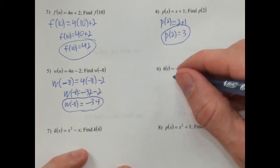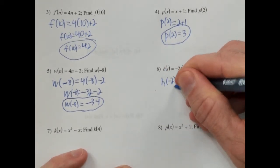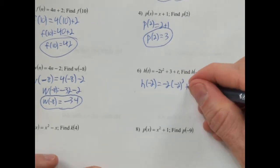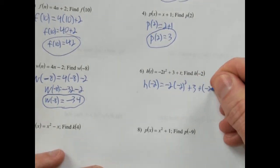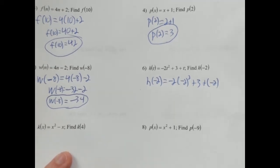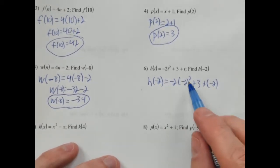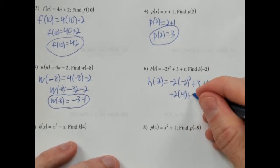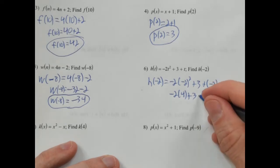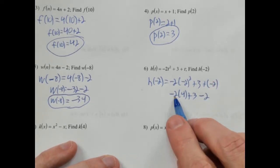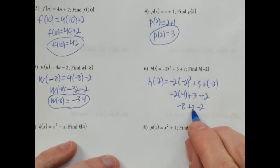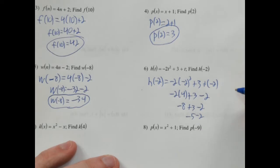h of negative 2: we're going to have negative 2 times parentheses negative 2 squared, plus 3, plus negative 2. Be careful — this is a little more complicated. We do the exponent first: negative 2 squared is 4. So negative 2 times 4 is negative 8, plus 3 minus 2. Negative 8 plus 3 is negative 5, minus 2 is negative 7. So h of negative 2 equals negative 7.